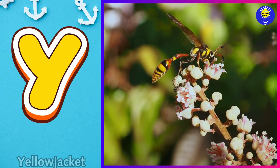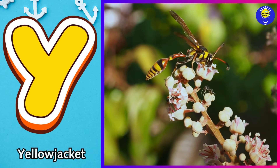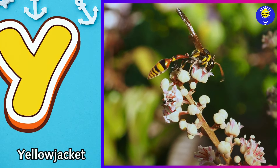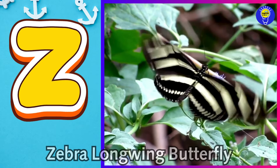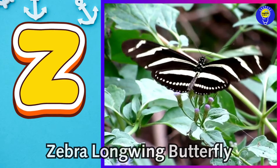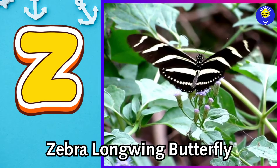Y is for yellow jacket. y, yellow jacket. Z is for zebra longwing butterfly. z, zebra longwing butterfly.